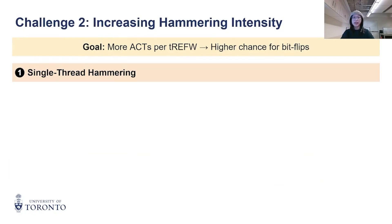With this goal in mind, let's take a closer look at a naive single-thread hammering loop, similar to hammering on CPU DRAM. First, the thread issues a load request to an aggressor row in memory. This triggers a row activation in DRAM, then the loaded data is transferred back to the SM.